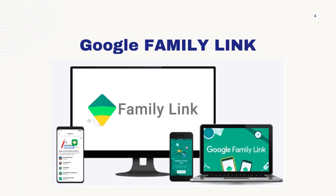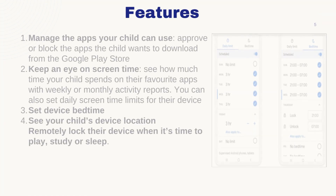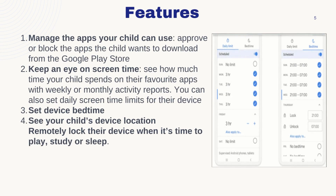Google Family Link can allow you to approve or block the apps your child wants to download from the Google Play Store. You can also see how much time your child spends on their favourite apps with weekly or monthly activity reports, and set daily screen time limits for their device.